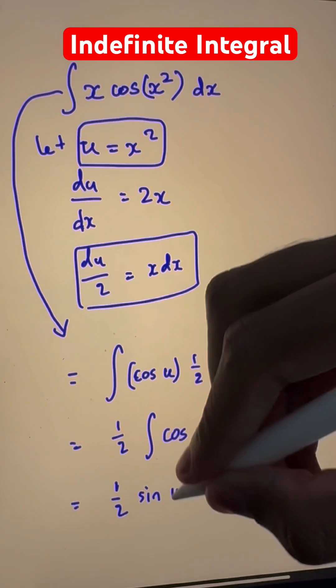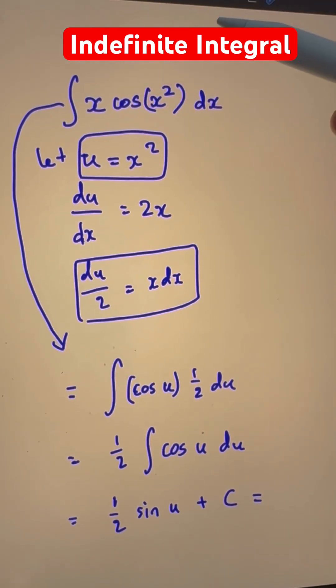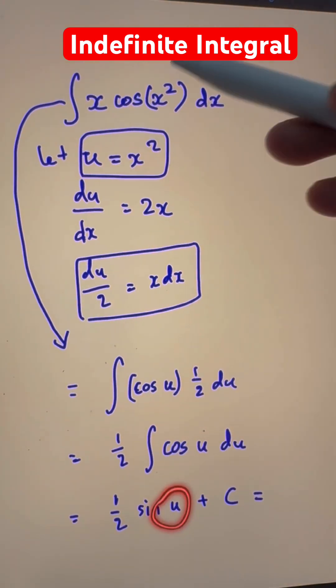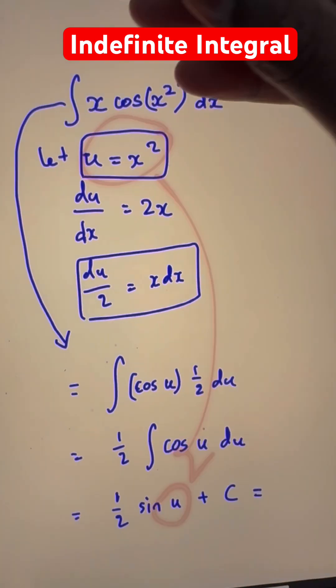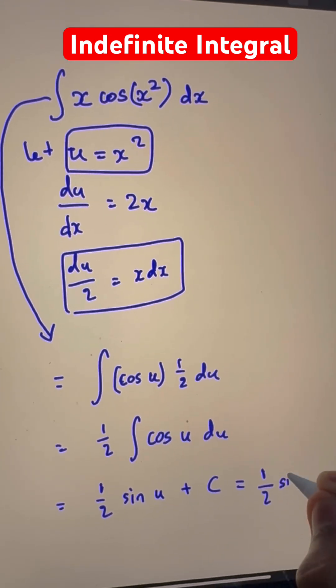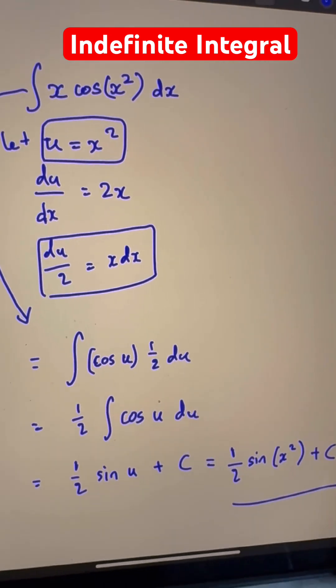But then this is in terms of u. And we definitely need it in x, not in u. So because the question states x, so we need to change this u back into x squared as we substituted at the start. So half sine of x squared plus c is our final answer.